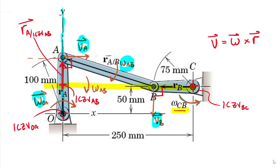Whether you're solving with ICZVs or relative velocity, this conceptual mapping helps provide reality to your computations — especially if you're doing vector algebra with cross products involving k-hats, i-hats, and j-hats. This gives you the information that V_A is going in the positive i-hat direction, V_B is going in the negative j-hat direction, omega_AB is going in the negative k-hat, and omega_OA is also going in the negative k-hat.